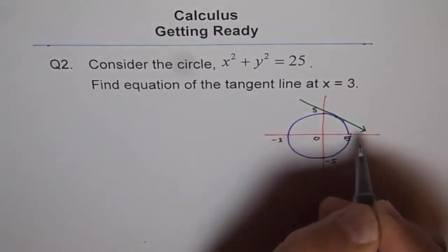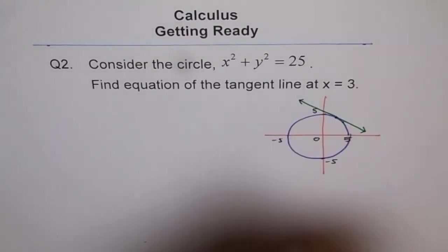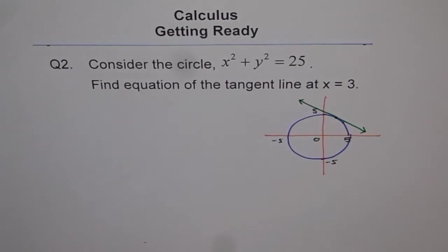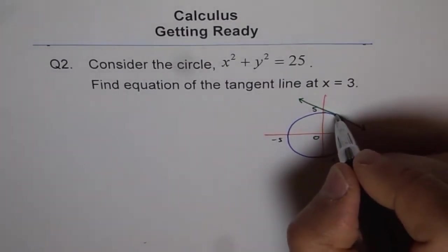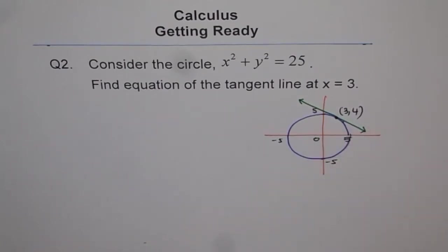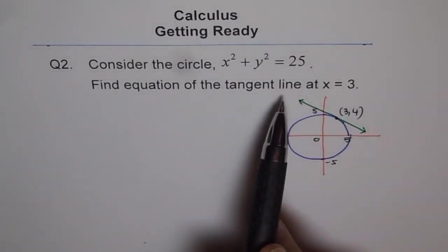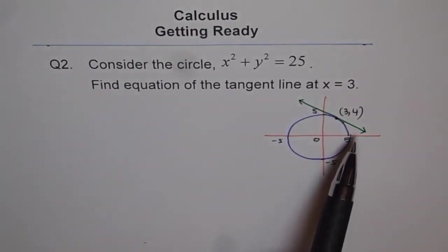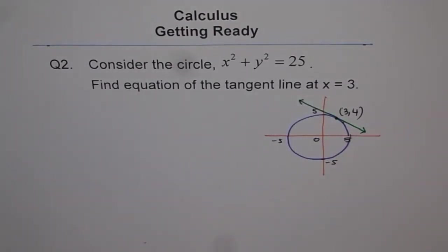So that is your tangent line. So tangent line is here and we are considering this point which is 3, 4. So basically find equation of the tangent line at x = 3 means find equation of this line. So I would like you to do this question and if you are struggling you need to review the techniques to find equation of tangent line given different conditions.